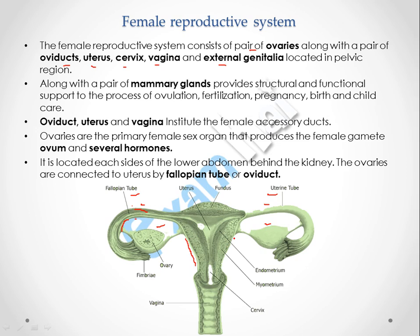The role of the uterus is to carry a baby — to carry a fetus after fertilization. When the baby starts growing in size, the wall of the uterus is stretchable and it also increases in size, and hence the development of a baby takes place inside the uterus. The uterus opens into the cervix, which opens into the vagina. The vagina is also called the birth canal, and is also the area required for copulation.